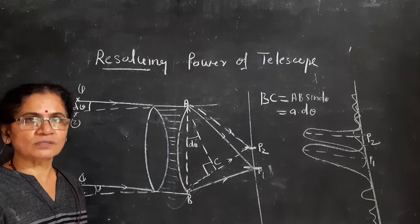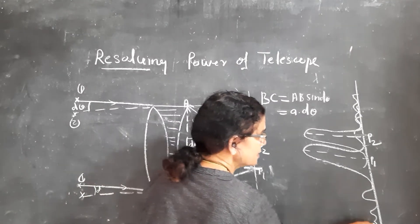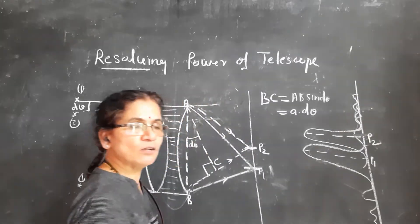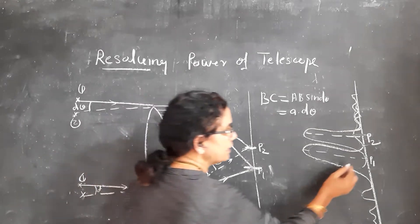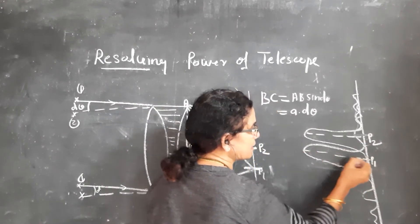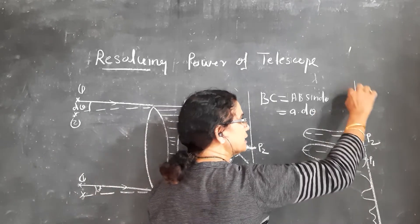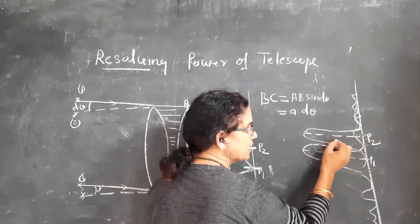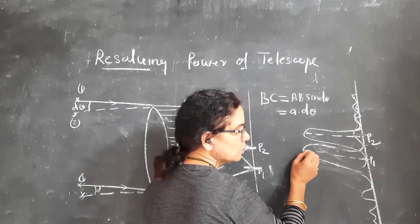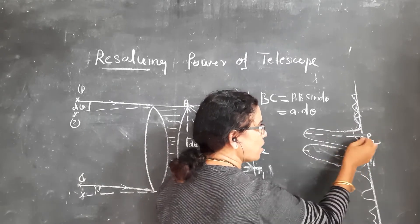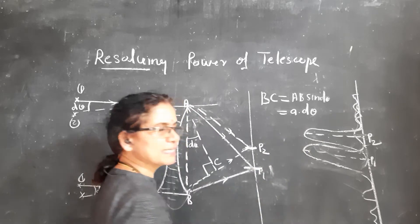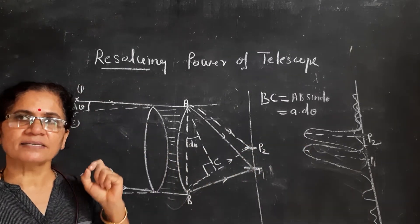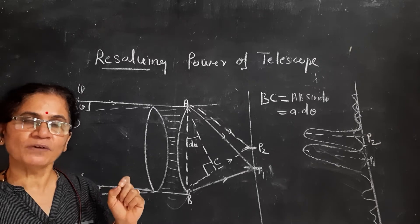If you see the diffraction pattern, the diffraction pattern of the first object gives a central maxima at point P1, and for the second object you get a central maxima at point P2. The minima of the second one coincides with the maxima of the first, and the minima of the first one coincides with the maxima of the second — that is as per Rayleigh's criteria of resolution. When this happens, the two images are just said to be resolved as per Rayleigh's criteria.